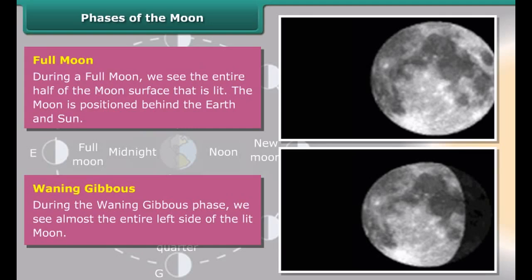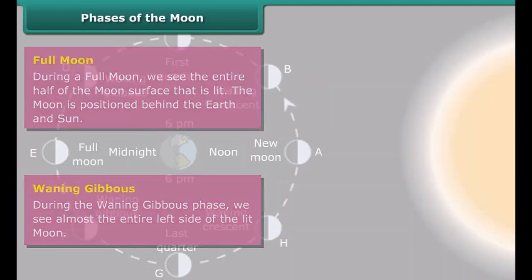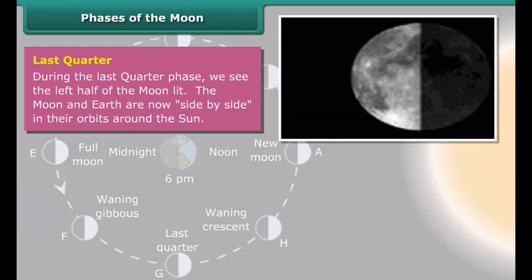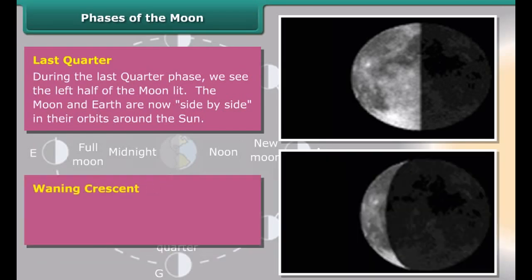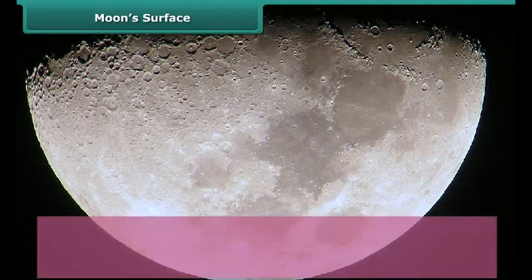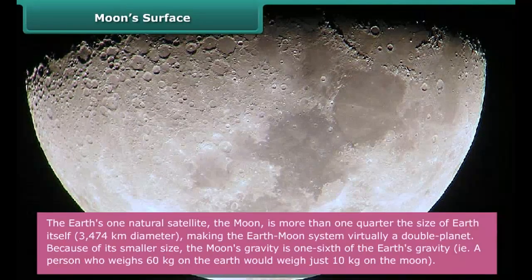Waxing crescent — during the waxing crescent phase, we see on the right side a small sliver of the lit Moon. First quarter — during the first quarter phase, we see the right half of the lit Moon. The Moon and Earth are now side by side in their orbits around the Sun. Waxing gibbous — during the waxing gibbous phase, we see almost the entire right side of the lit Moon.